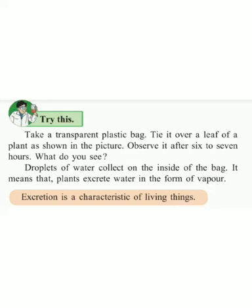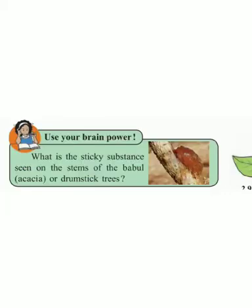Excretion is a characteristic of a living thing — hei characteristic kai hai living things saa. Use your brain power: what is the sticky substance seen on the stem of a babul, acacia, or a drumstick? — manche is babul aani shayuga, yaa vanaspatin cha khoda war disnada chikat padartha kai aahi. Write the answer to this question in your notebook.